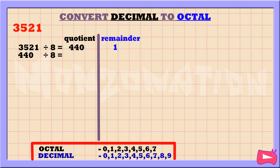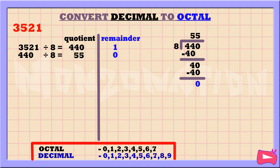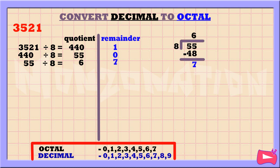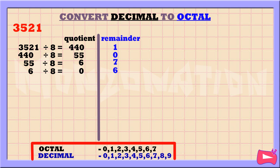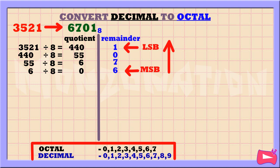Now let's take the quotient 440 and divide it by 8. 440 divided by 8 is 55, remainder 0. Let's continue dividing until the quotient becomes 0. 55 divided by 8 is 6, remainder 7. Then 6 divided by 8 is 0, remainder 6. Once the quotient is 0, we stop. At the bottom is the MSB, at the top is the LSB. Reading remainders from bottom to top, the octal equivalent of 3521 is 6701 base 8.